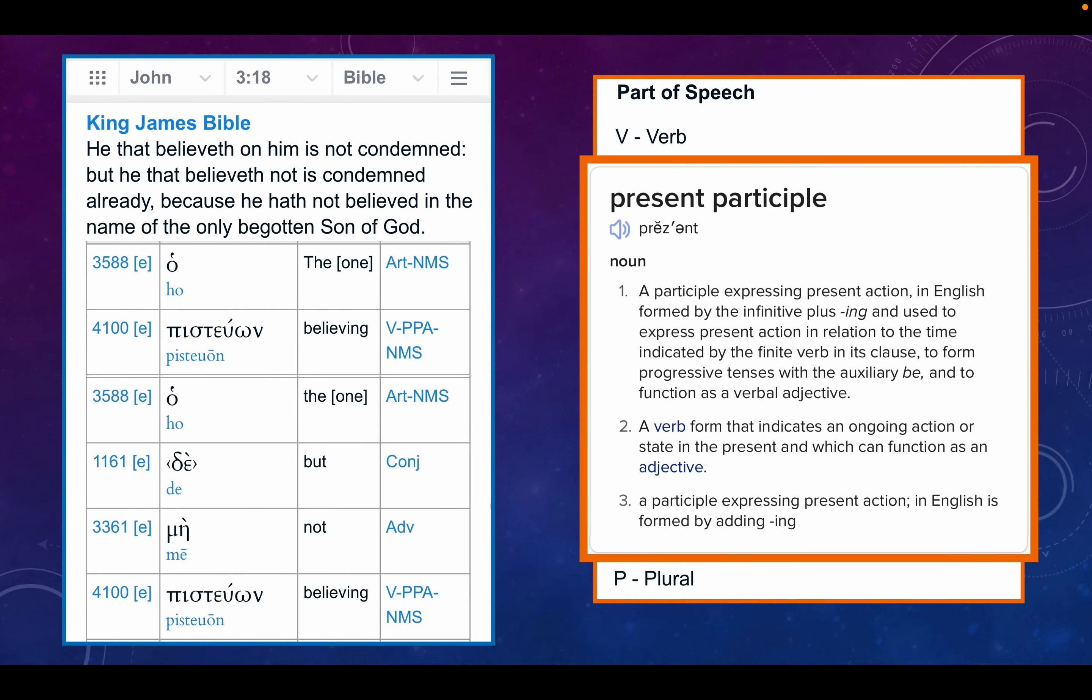John 3 verse 18. Because he hath not believed in the name of the only begotten Son of God. Or pisteon, the believing one. Or me pisteon, the one not believing, present participle. Ongoing belief.